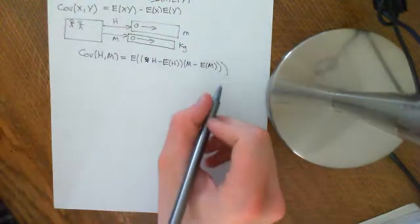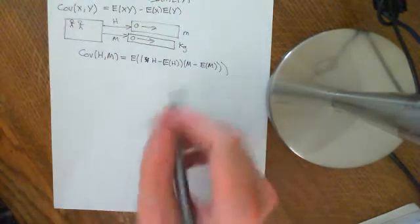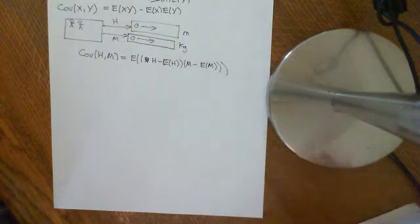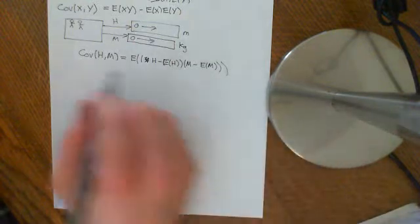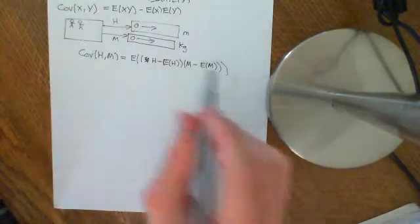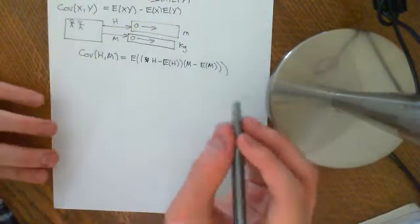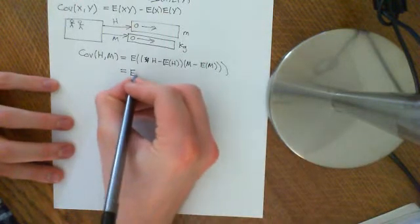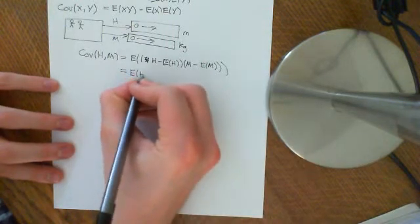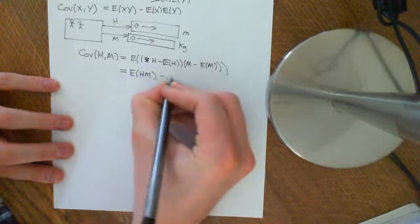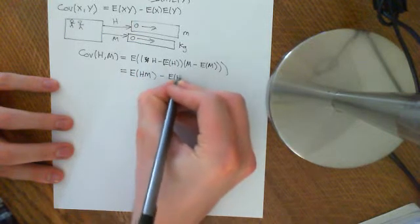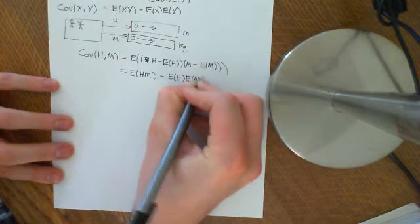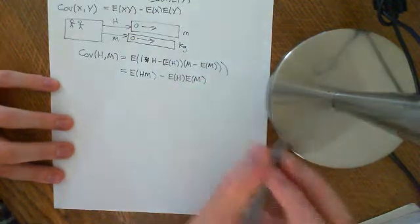There's a better notion of correlation, called simply the correlation, which we will discuss in future videos. It is basically just a standardised version of the covariance. We saw that another way of writing this was the expected value of H times M minus the expected value of H times the expected value of M. Now we want to look at some properties of covariance.